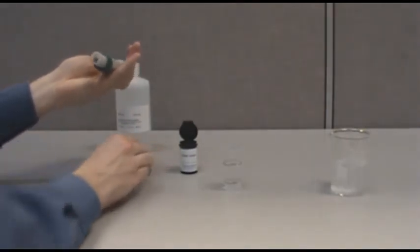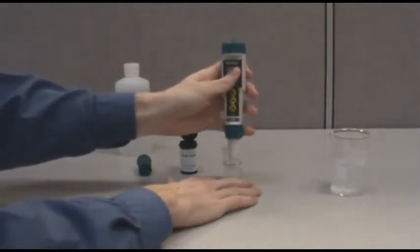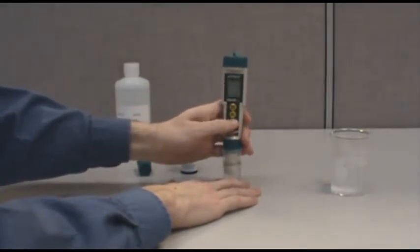Place the meter into the standard and switch on the instrument using the on-off key. The meter will then go through its internal calibration.